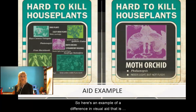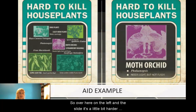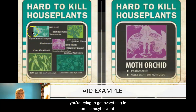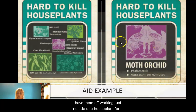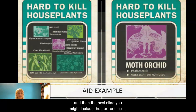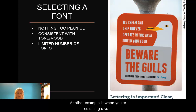Here's an example showing the difference between a visual aid that is easier to read and one that is harder to read. The slide on the left is harder to read because you're trying to fit everything in. A better approach might be to dedicate one slide per plant — for example, 'Hard to Kill House Plants': show the moth orchid on one slide, the long-leaf fig on the next, and so on. Keep your aid very simple and always ask yourself: will my audience be able to see this?